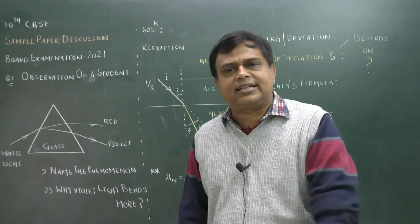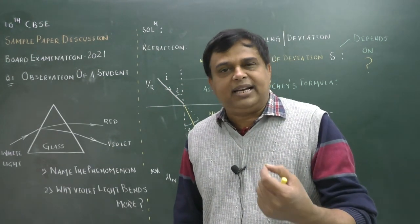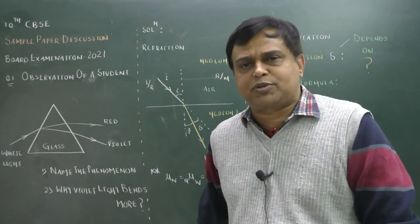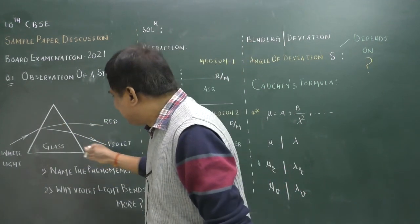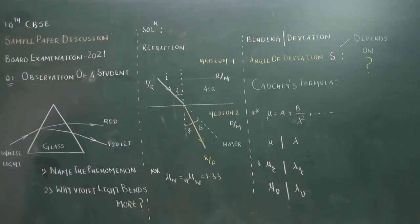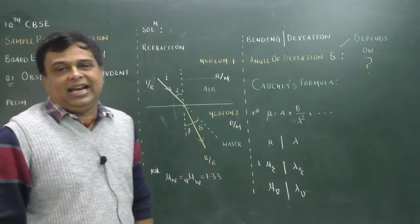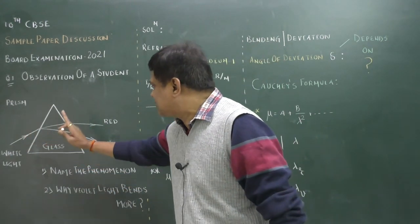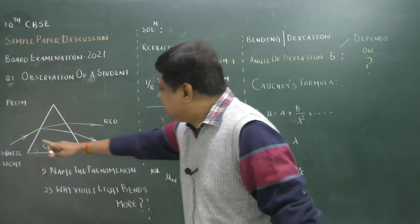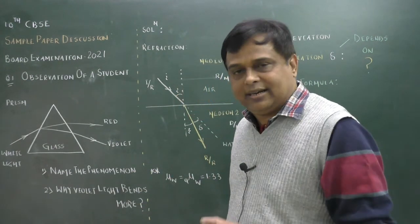So this is the third question. It is related to optics, and it is a very beautiful question. A student's observation: this device we call a prism. White light enters here on the left side, and on the right side is the exit. It is the incident light and the emerging light. In the emerging light you will observe seven colors.